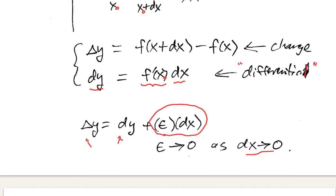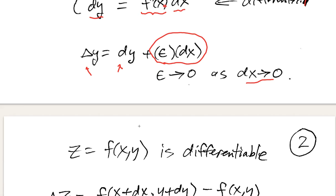In our original definition, you'd have the change in y divided by the change in x: delta y over delta x equals dy over dx plus epsilon. And then you take the limit as dx approaches zero. That would mean the instantaneous rate of change is dy over dx — epsilon goes to zero — so the instantaneous rate of change of the function is the slope of the tangent line to the curve at that point.